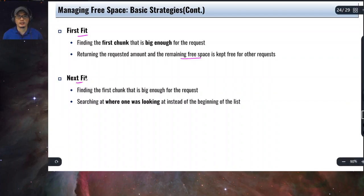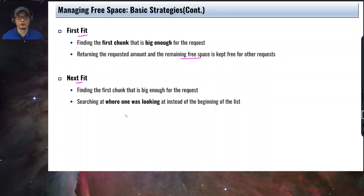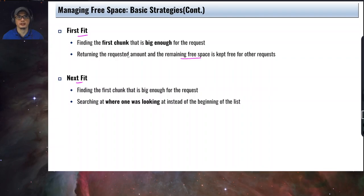The fourth strategy is next fit: similar to first fit in finding the first chunk big enough for the request, but instead of starting at the beginning of the list, you search from where the last search left off. You maintain a running pointer that traverses the free list, and when a request is made, you start from that running pointer — which initially starts at the head — to find a chunk large enough.